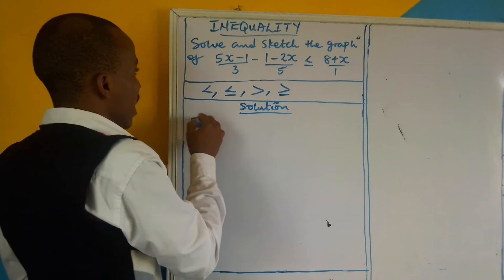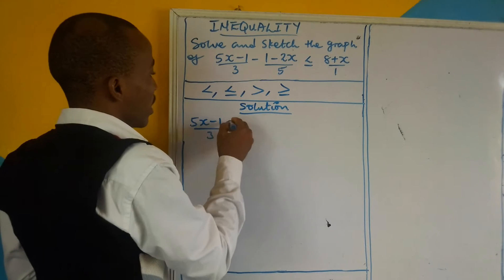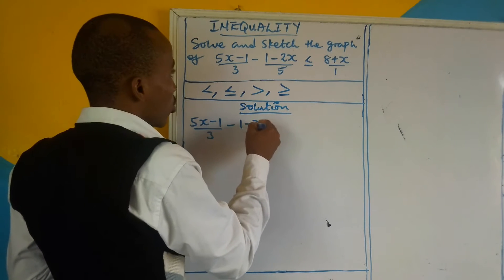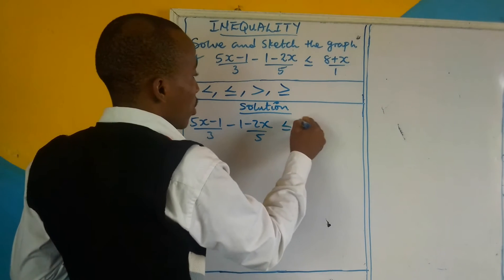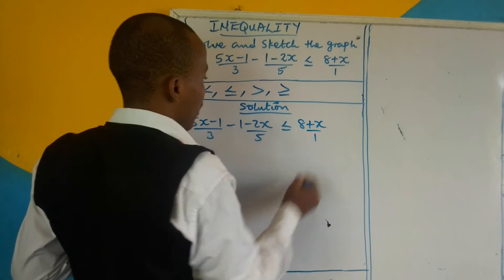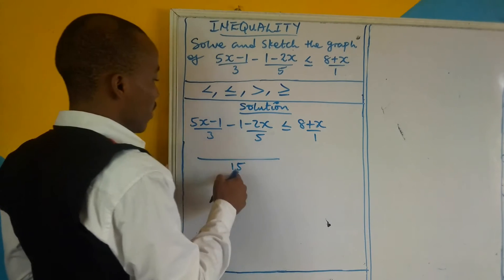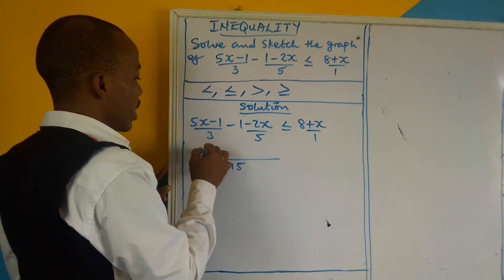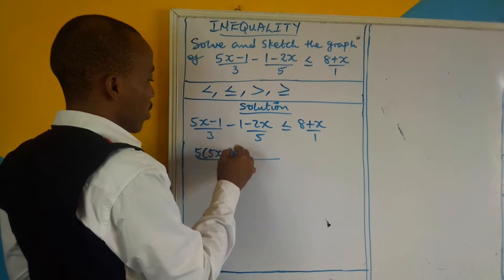The question before us is: 5x minus 1 over 3, minus 1 minus 2x over 5, is less than or equal to 8 plus x over 1. The LCM from here is 15. 3 into 15 is 5, so if I multiply this, we have it as 5x minus 1.